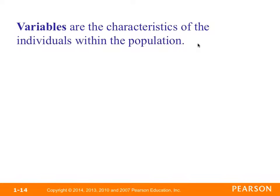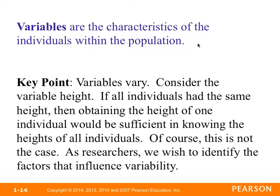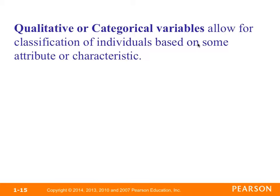Now I want to talk about variables. Variables are the characteristics of the individuals within the population. A key point is that variables vary — that's why they're called variables. As researchers, we wish to identify the factors that influence the variability. We have two types of variables: qualitative variables, also called categorical variables, and quantitative variables, which provide numerical measures of individuals. Arithmetic operations such as addition and subtraction can be performed on quantitative variables and provide meaningful results.